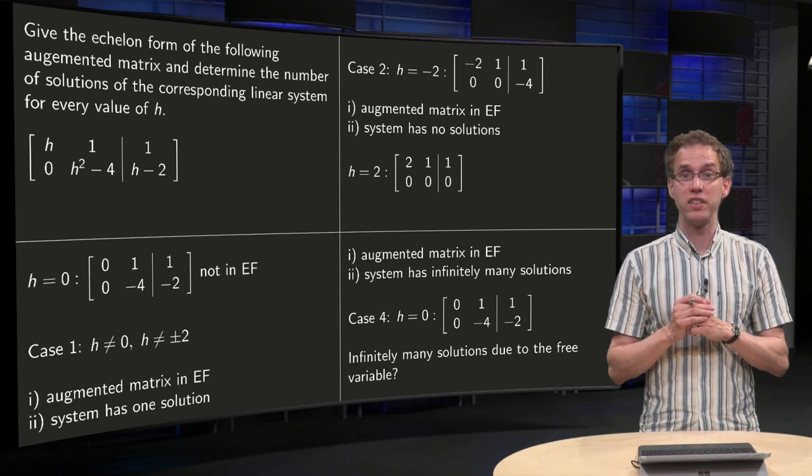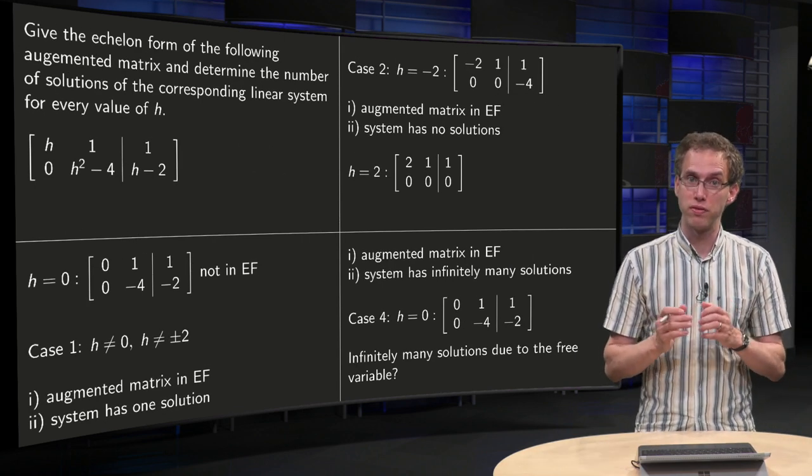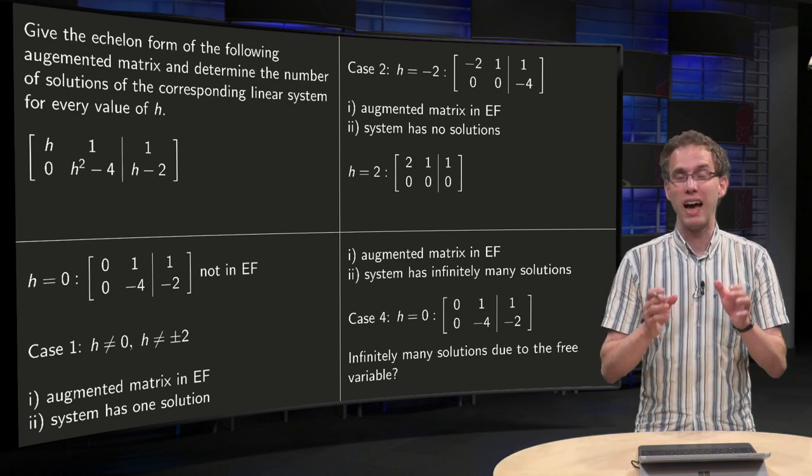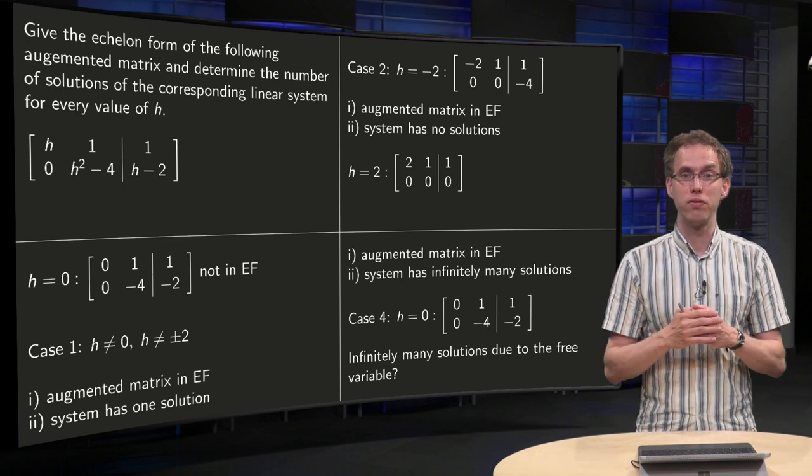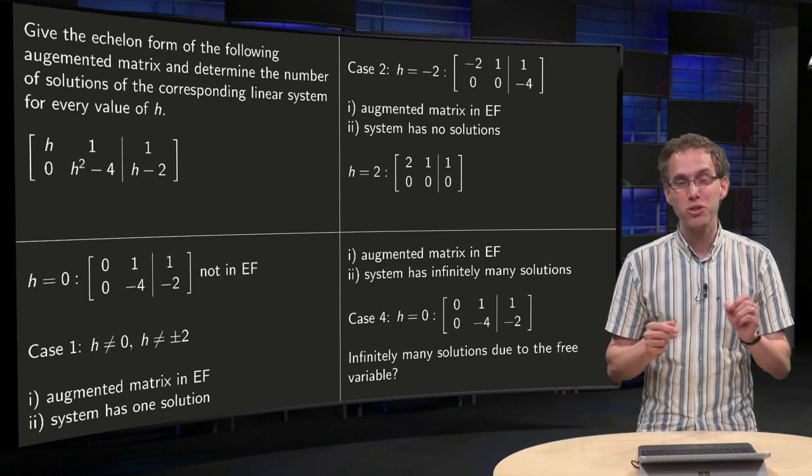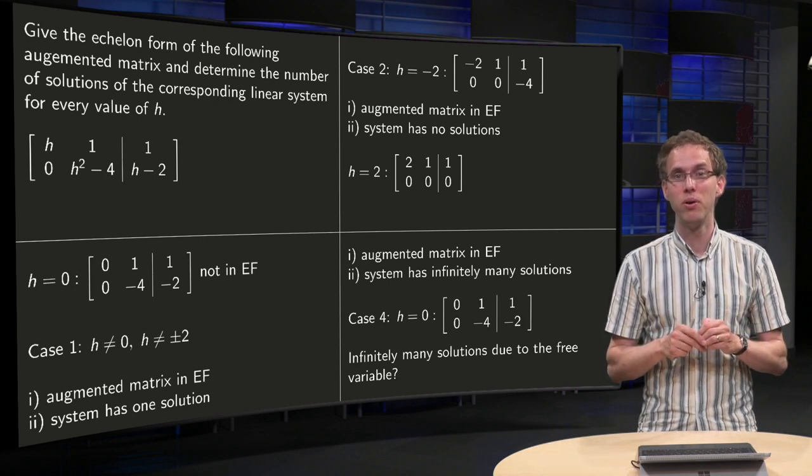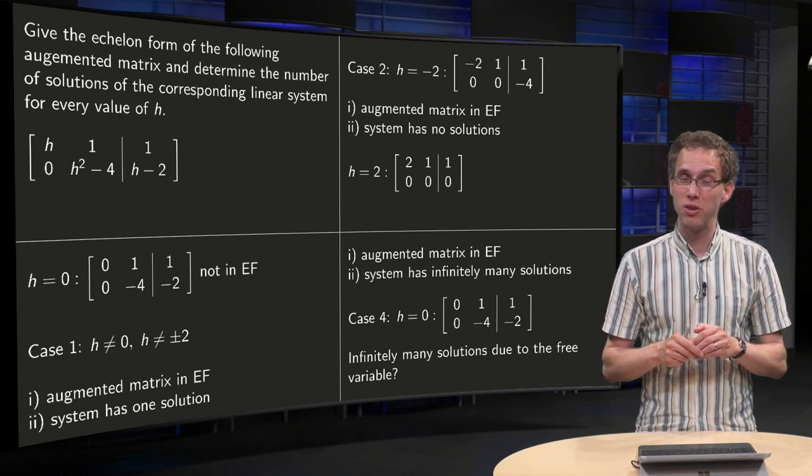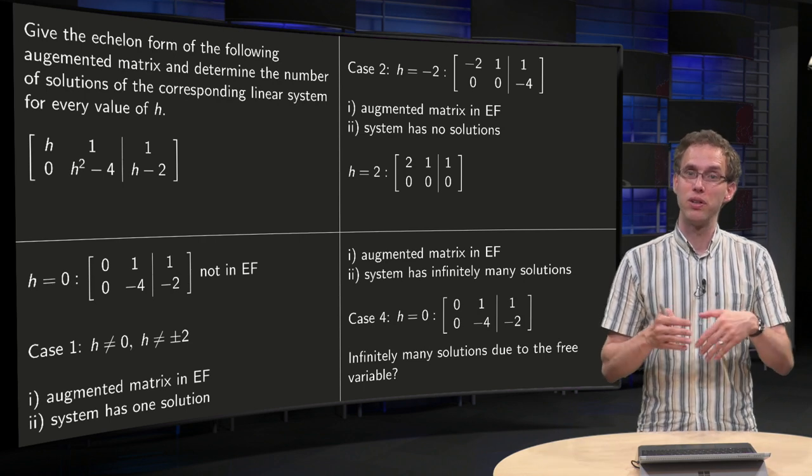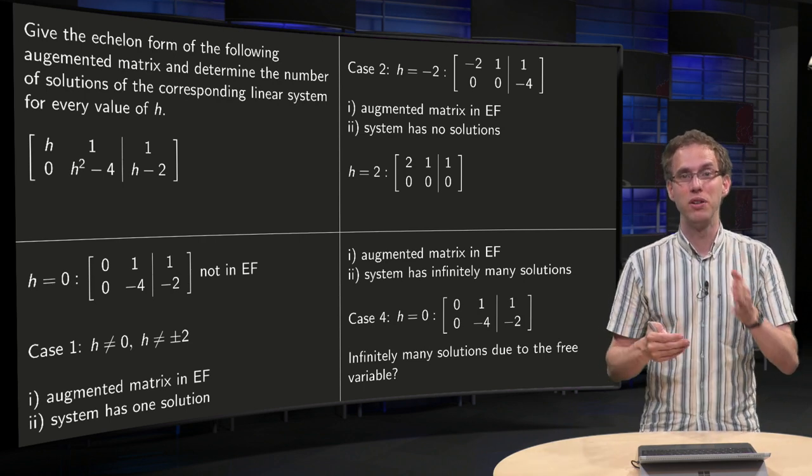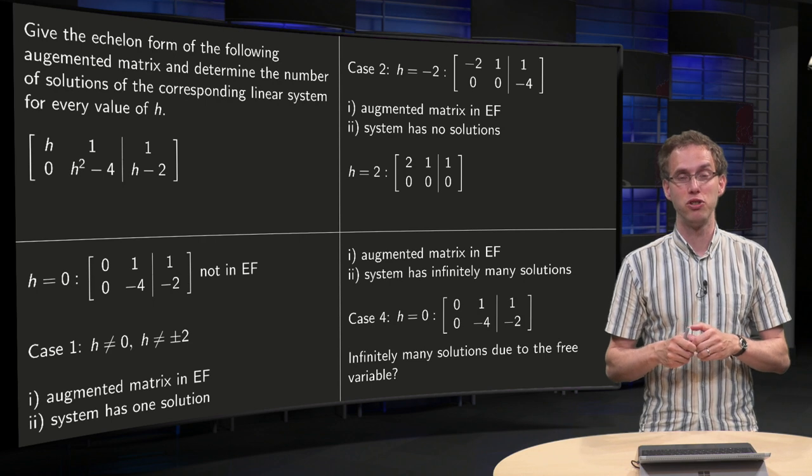Our matrix is already in echelon form, that part is fine, but be careful it has an infinite number of solutions, not due to the fact that you have a zero row, but due to the fact that you have a free variable.